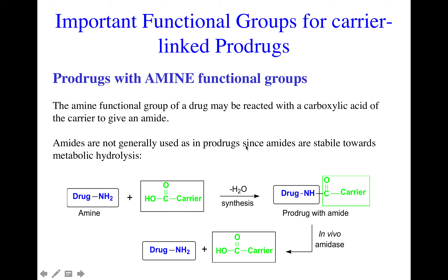Amides are not generally used in prodrugs, and the reason for that is that amides are quite stable towards metabolic hydrolysis. In most cases, amides are used if you want to improve the stability of your drug. But remember that this may cause difficulty in actually releasing your drug, because the amides are stable towards metabolic hydrolysis. There are a few examples of prodrugs made through the amide prodrug approach, but it is quite rare.